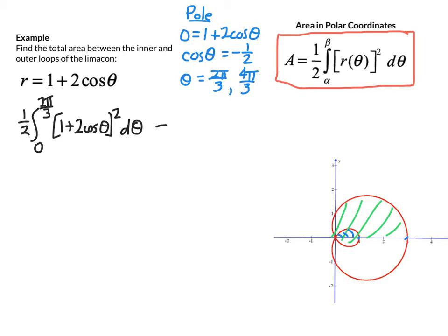It's the same polar function, but the bounds are, if we follow the flow of the curve, the point where it's hitting the polar axis is theta equals pi, and then it's coming through the pole again at 4 pi over 3. So I need to subtract 1 half the integral from pi to 4 pi over 3 of the same integrand. In order to find the total area enclosed, we use symmetry. We're going to double the whole thing, times 2, and that will cancel with the 1 half factors.